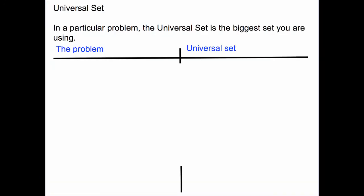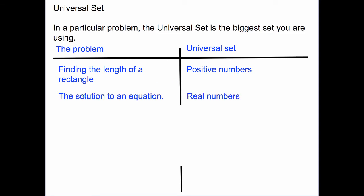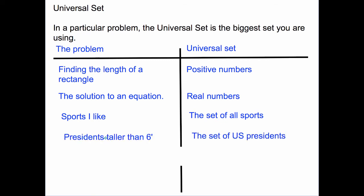Finally, the last concept: universal set and complement. In a particular problem, the universal set is the biggest set you are using. For example, if the problem is finding the length of a rectangle, the universal set might be positive numbers. If you're solving an equation, it might be the real numbers. If the problem is to list the sports that I like, the universal set might be the set of all sports. If the problem is to find presidents taller than six feet, the universal set would be the set of U.S. presidents. And if you want to find vegetables that I detest, the universal set might be the set of all vegetables.